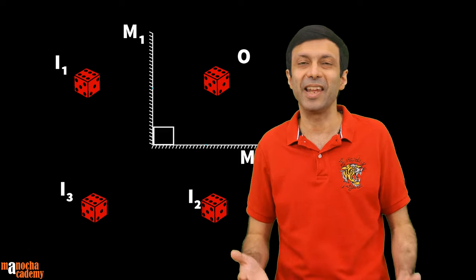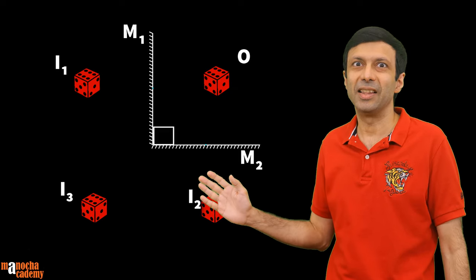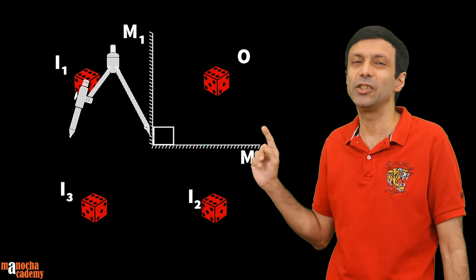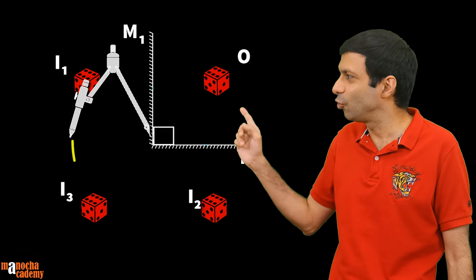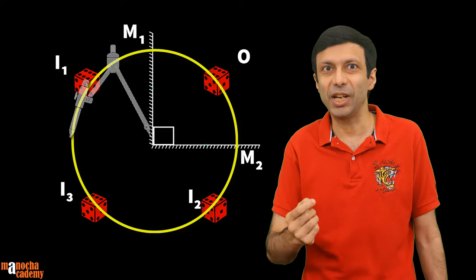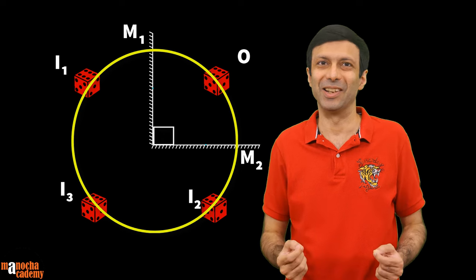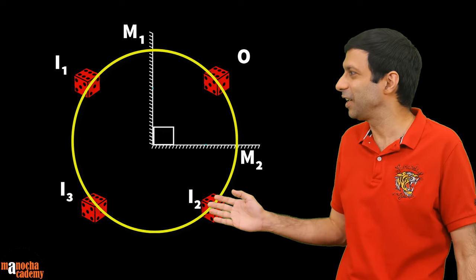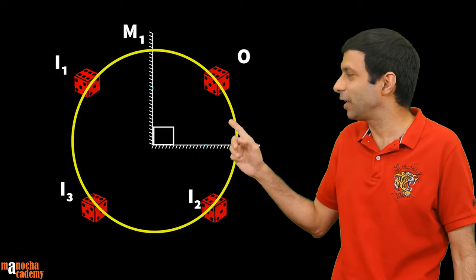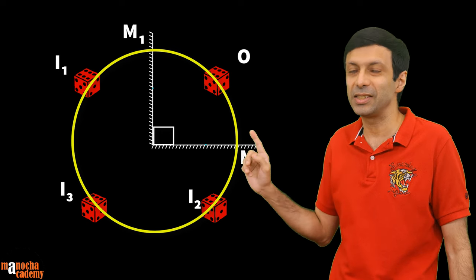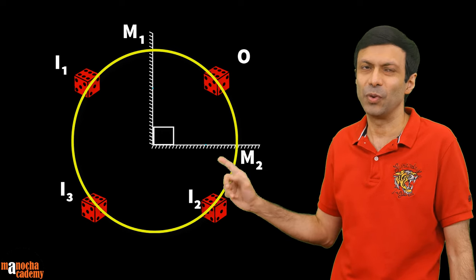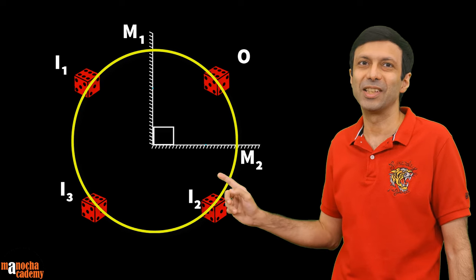Another very interesting thing about this case: if you place a compass at the point where the two mirrors meet and draw a circle, the object and all three images will all lie on that circle. So the object and all three images are equidistant from the center where the two mirrors meet — they all lie on the circle. Now you know how two inclined mirrors can give you multiple images!